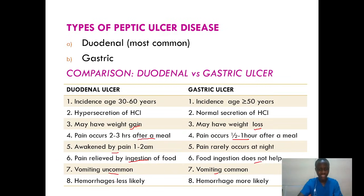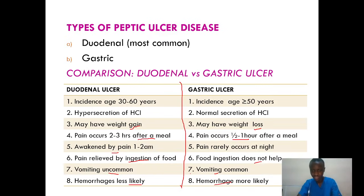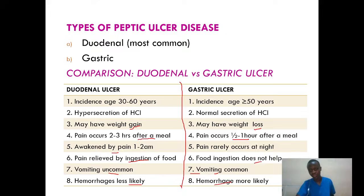For duodenal ulcer, pain is always relieved by ingestion of food, but for gastric ulcer, food ingestion does not help. Vomiting is always uncommon with duodenal ulcer, but vomiting is always common with gastric ulcer. Hemorrhages are less likely to occur with duodenal ulcers, but for gastric ulcer, there's always a higher risk of developing hemorrhage. Key recap: vomiting is more common with gastric ulcer; pain is relieved by food in duodenal ulcer; weight gain occurs in duodenal while weight loss in gastric.